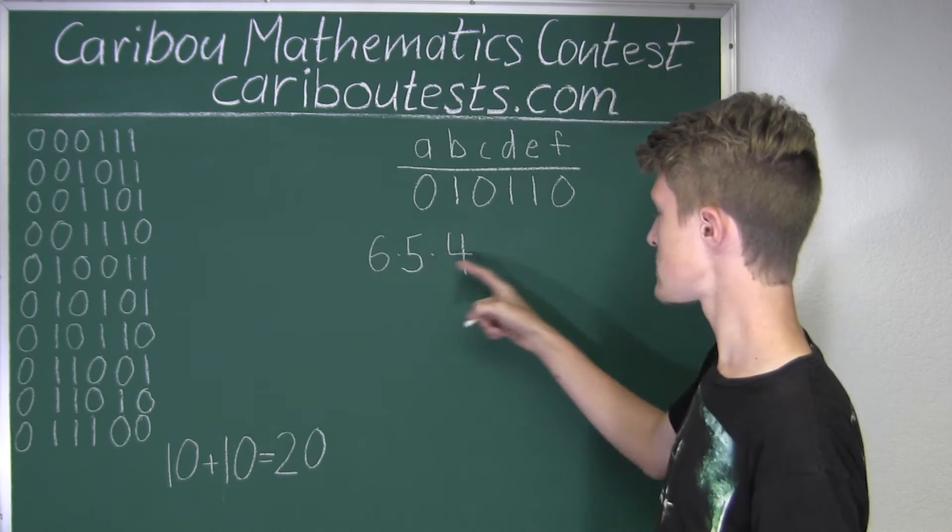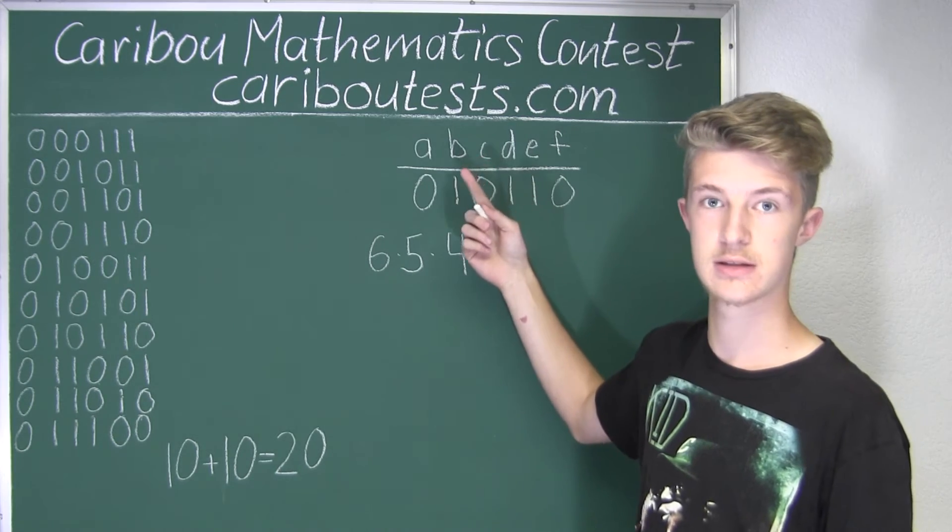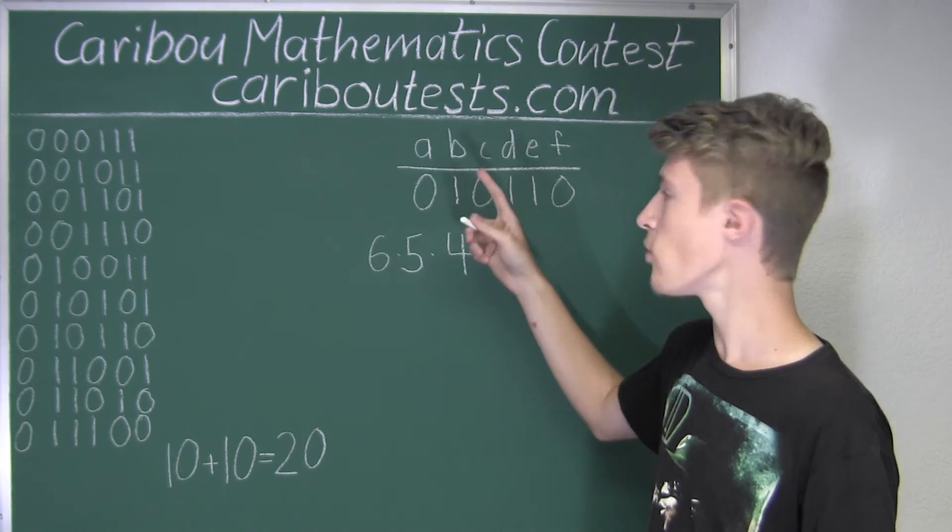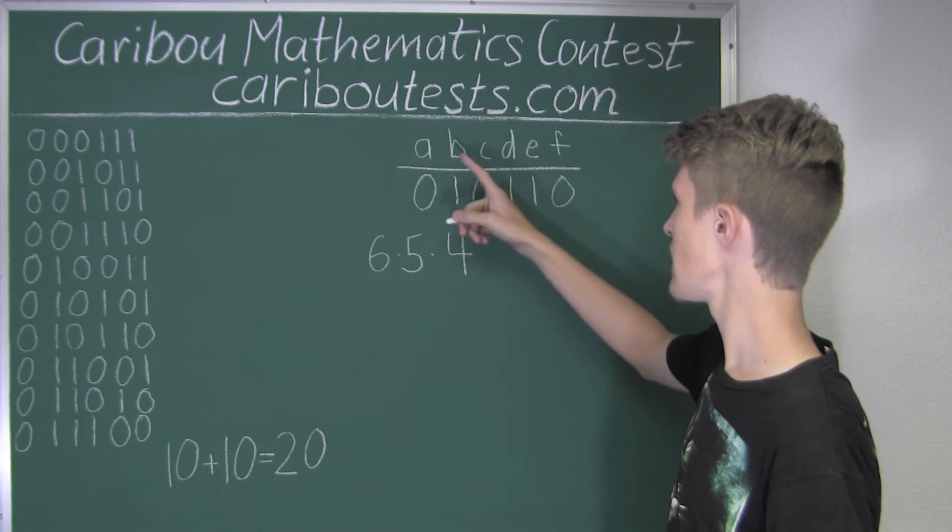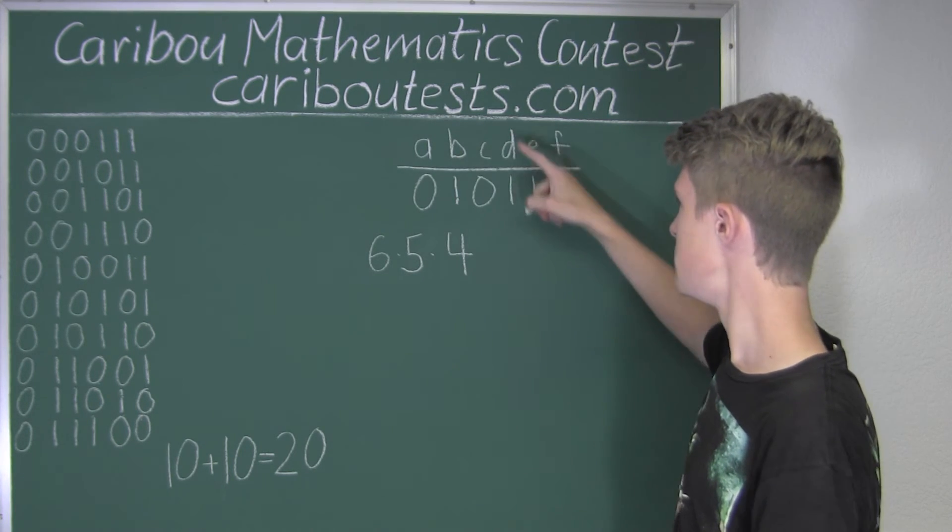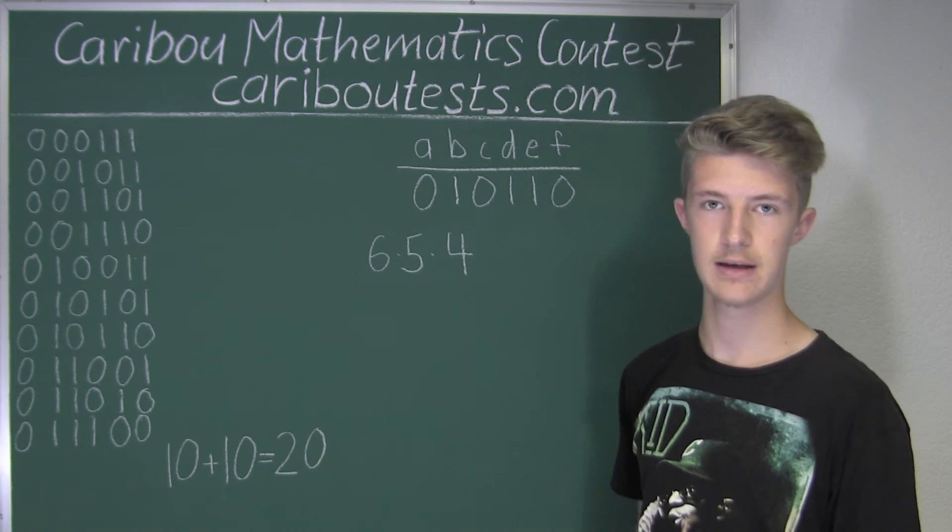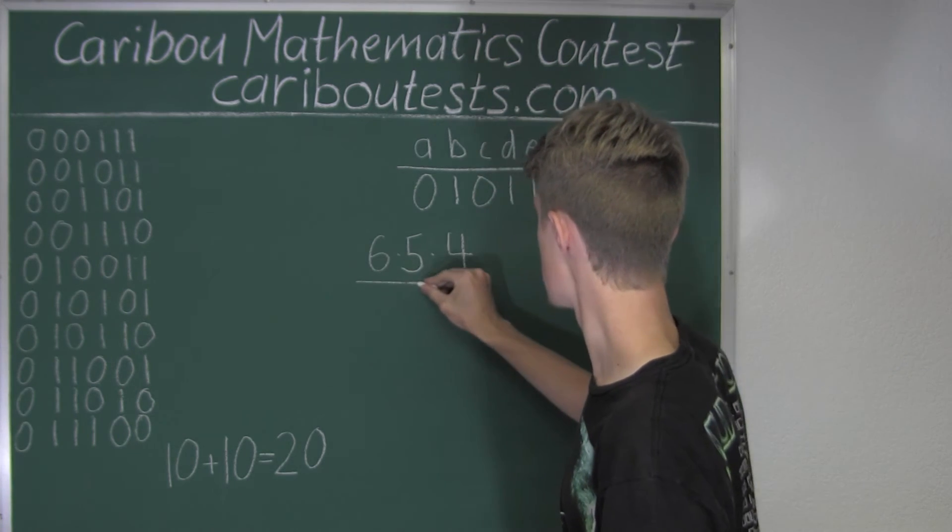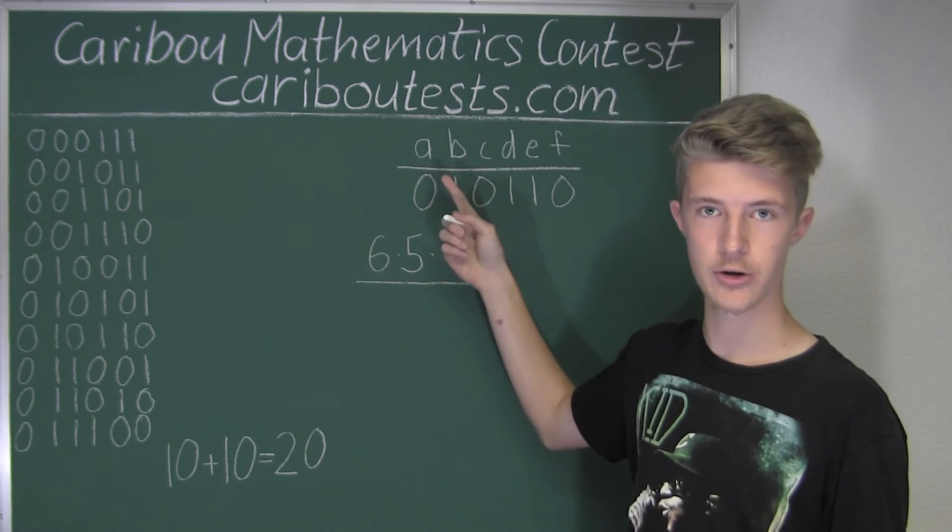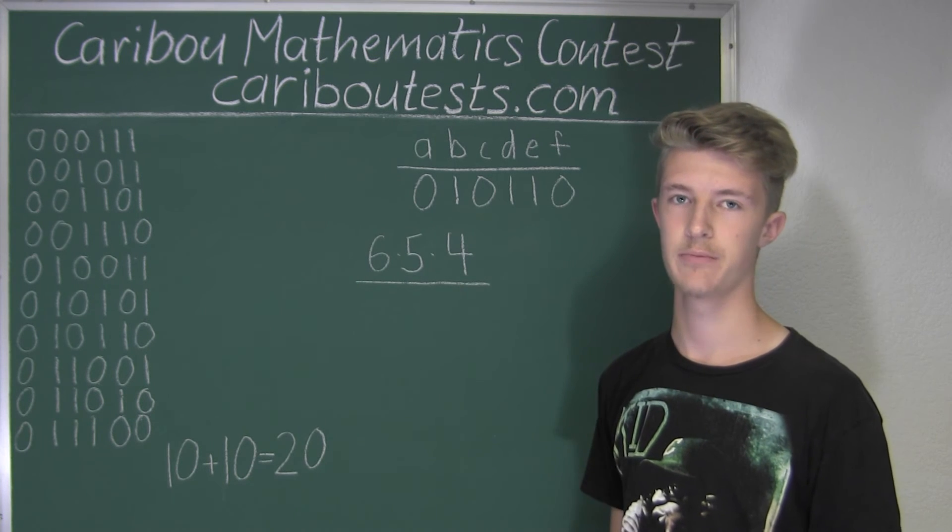All right, so now this would be the answer if the order of the letters did matter. But the order of the letters does not matter because it doesn't matter if we first have the B and then the D or the D and then the B. They are both represented by one, so they would just give the exact same sequence. So now we must divide this by all possible orders of three letters, which is also known as the number of permutations.